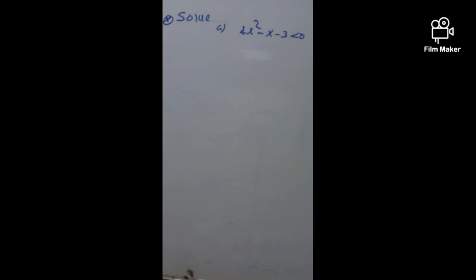In order to find the solution of the quadratic inequality, we can use three different methods. The first method is factorization, the second method is the sign chart method, and the last will be the graphical method. We can also use a completing the square method to find the solution of this inequality.